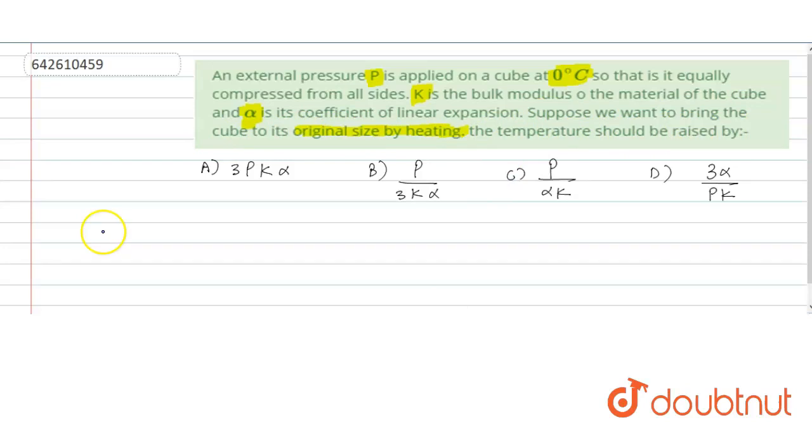Let's understand the concept. So we are given with an isotropic cube. And if an external pressure P is applied to it, initially its temperature is 0 degree Celsius. So now let's say some external pressure is applied.